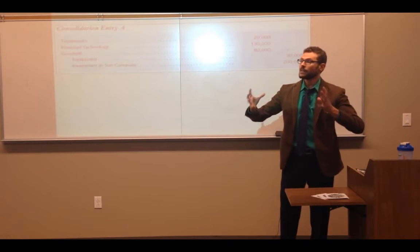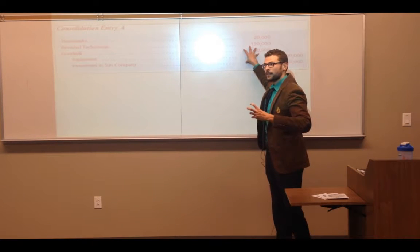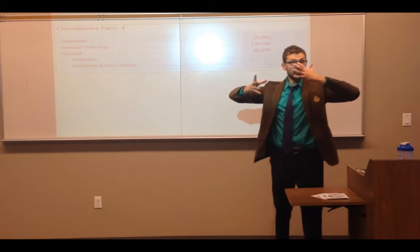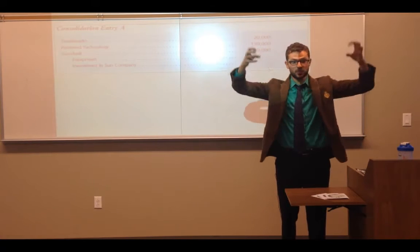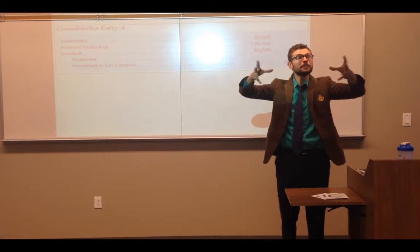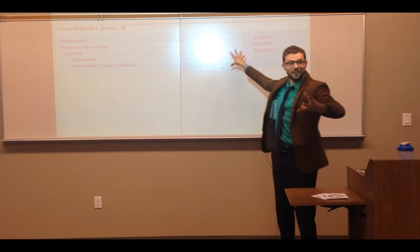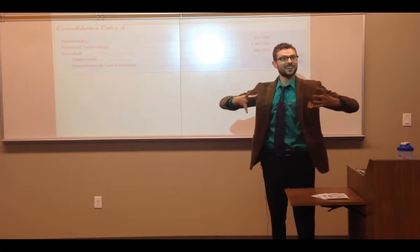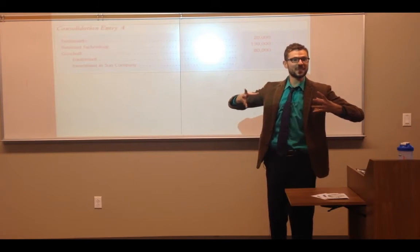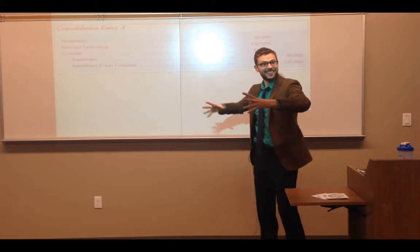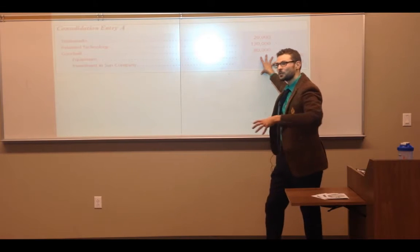Keep in mind what ends up in the consolidated report. You're summing up the two companies' book value of assets - current assets, patents, trademarks, you're just summing. But what's missing? The excess of the fair value, because the reason you have this entry is that if you just go summing, you're going to miss this excess fair value piece, because that's not in the financial statements of the subsidiary or the parent. This piece only appears on the consolidated worksheet.